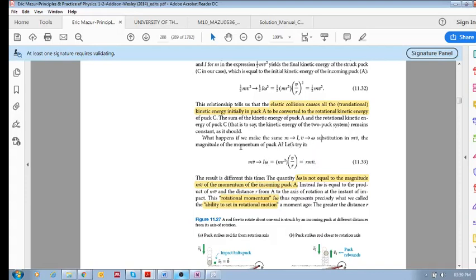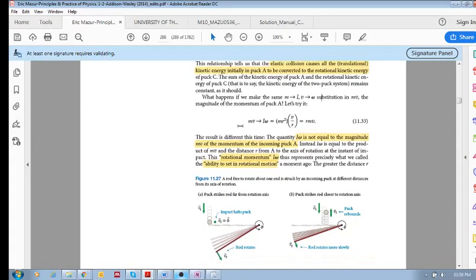Okay, now what are we trying to say here? A puck with a certain momentum mv will have an angular momentum, a rotational momentum, equal to mv times the radius. So what we're saying is the same puck that has a momentum of mv